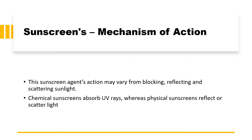How does sunscreen actually work? The sunscreen's action may vary — it may either block, reflect, or scatter the sunlight. Chemical sunscreens actually absorb the UV rays, whereas physical sunscreens reflect or scatter the light. So there are three ways sunscreen works: blocking, reflecting, and scattering — the first two done by physical sunscreens and the third by chemical sunscreens.